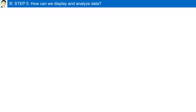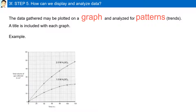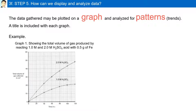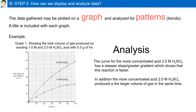How can we display and analyze data? The data gathered may be plotted on a graph and analyzed for patterns or trends. A title is included with each graph. For example, the graph shows the total volume of gas produced by reacting 1.0 molar and 2.0 molar sulfuric acid with 0.5 grams of iron. Analysis: The curve for the more concentrated acid — 2.0 molar sulfuric acid — has a steeper slope, showing that this reaction is faster and produced a larger volume of gas in the same time.